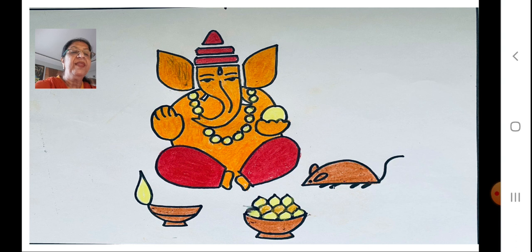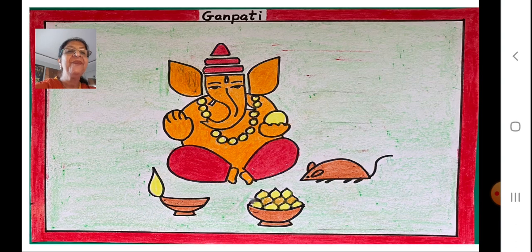Yes. After this we color the mushyak, the plate, the modaks, and the diya. So now everything has been colored. But still it is not complete. It is not complete. Why? I will tell you why. Yes.